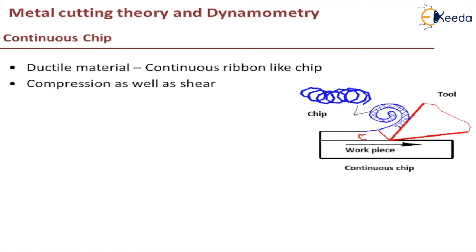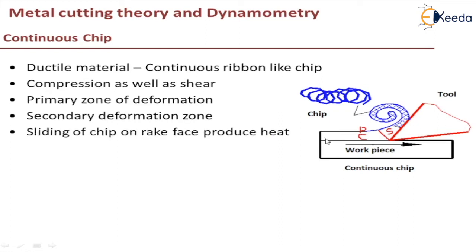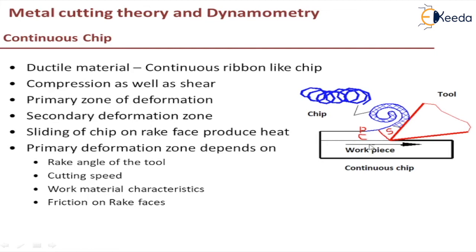Ahead of the shear plane is the primary deformation zone, and then after the shear plane, on the rake surface, is the secondary deformation zone. Both these zones and the sliding of the chip on the rake face produce heat, which increases the temperature at the tool-chip interface and thus increases the temperature of the cutting tool. The primary deformation zone depends on rake angle of the tool, cutting speed, work material characteristics, and friction on rake face.